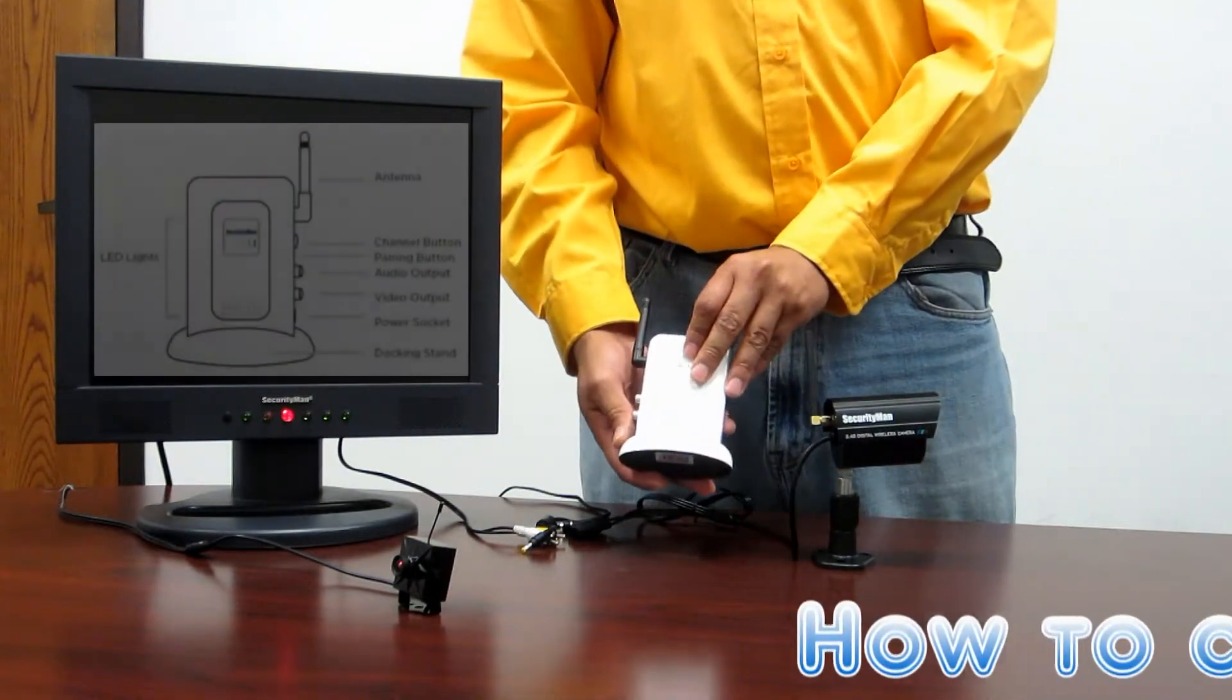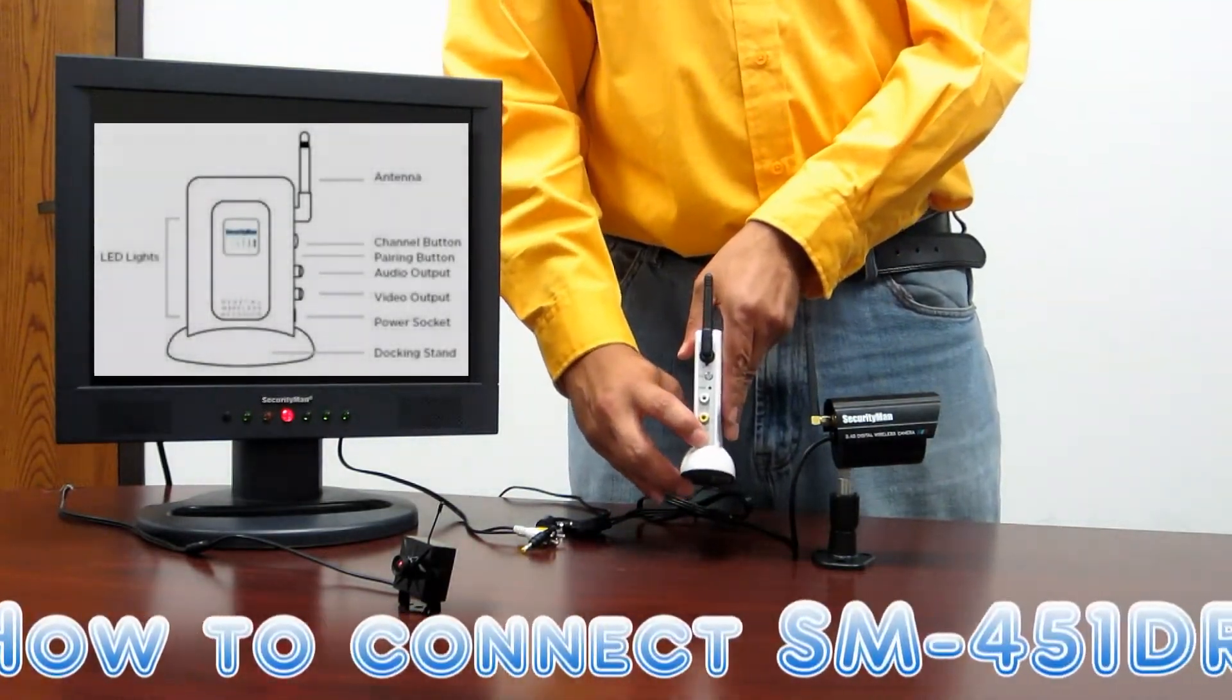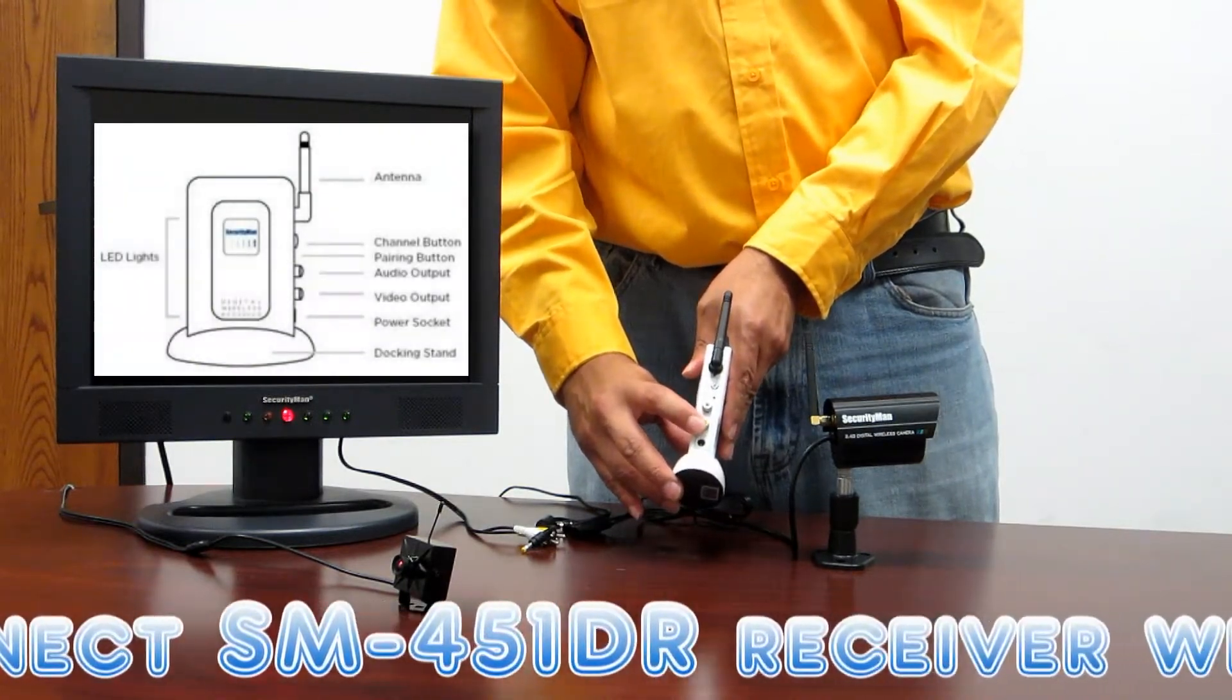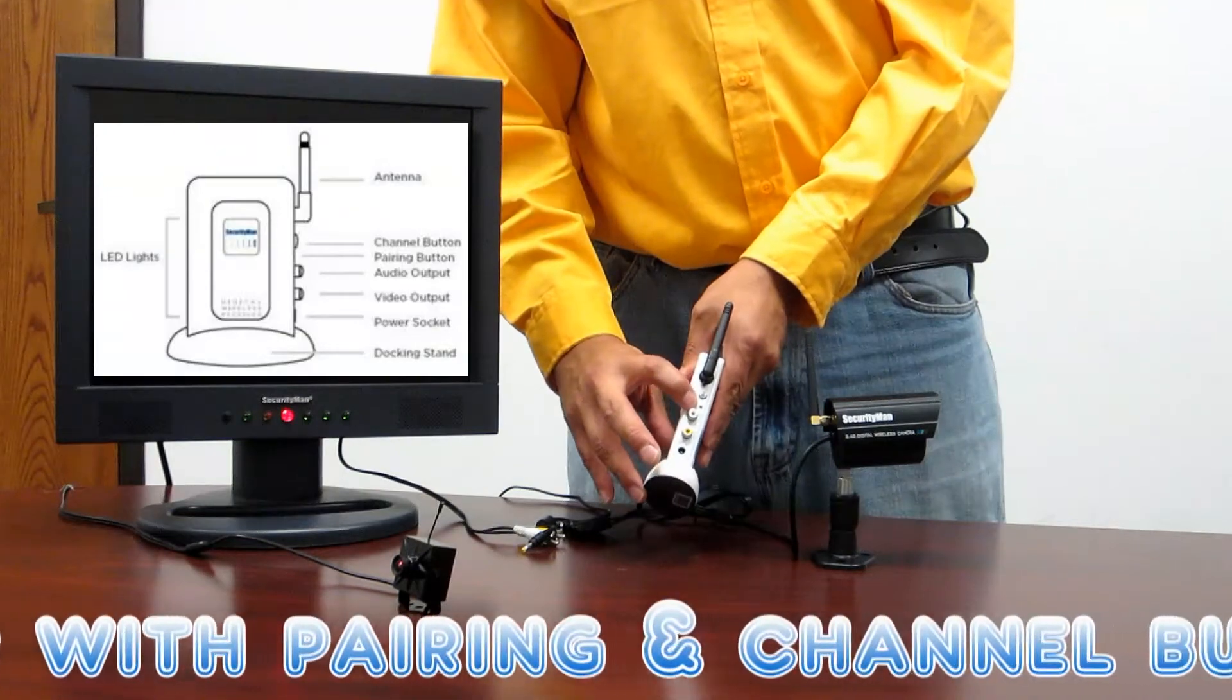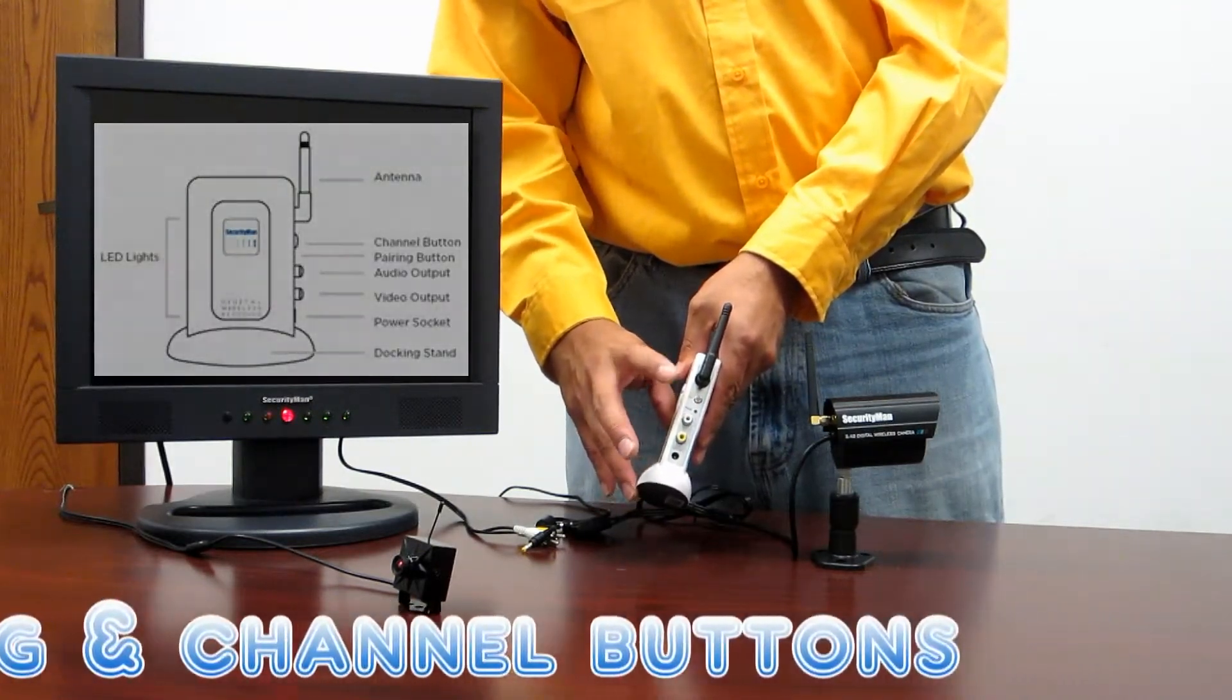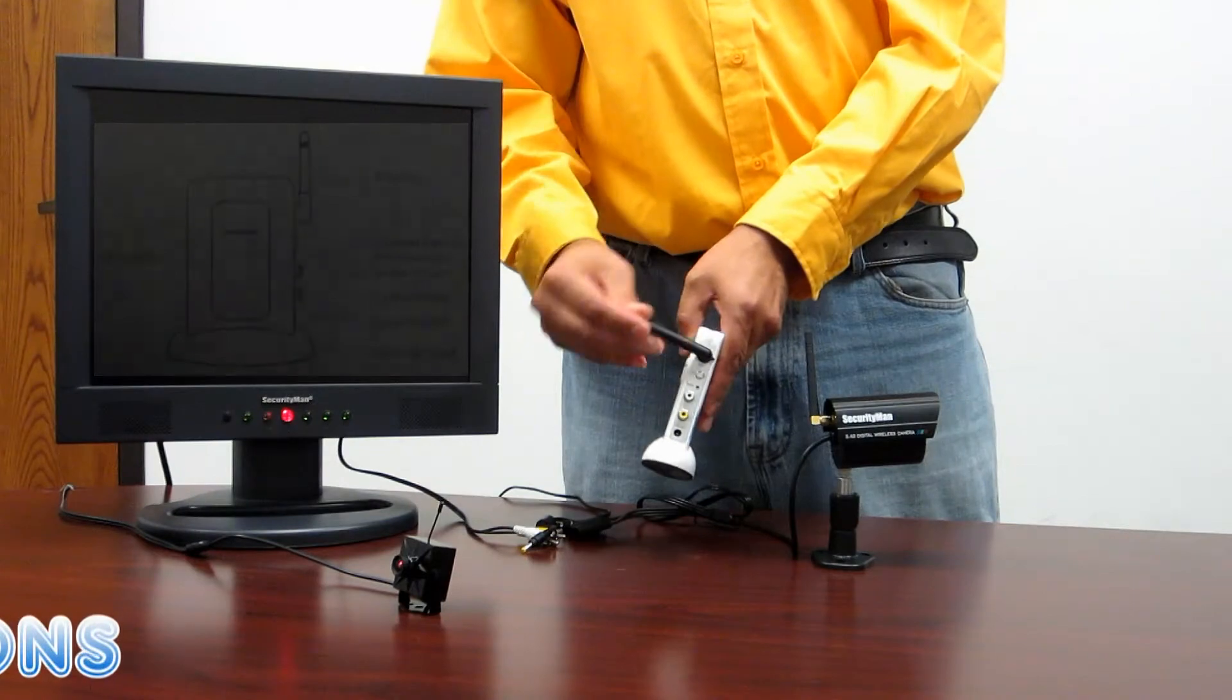On the receiver itself you've got your power socket at the bottom, your video and audio components, your pairing button which is a little black one, your channel switch button, and your rotating antenna.